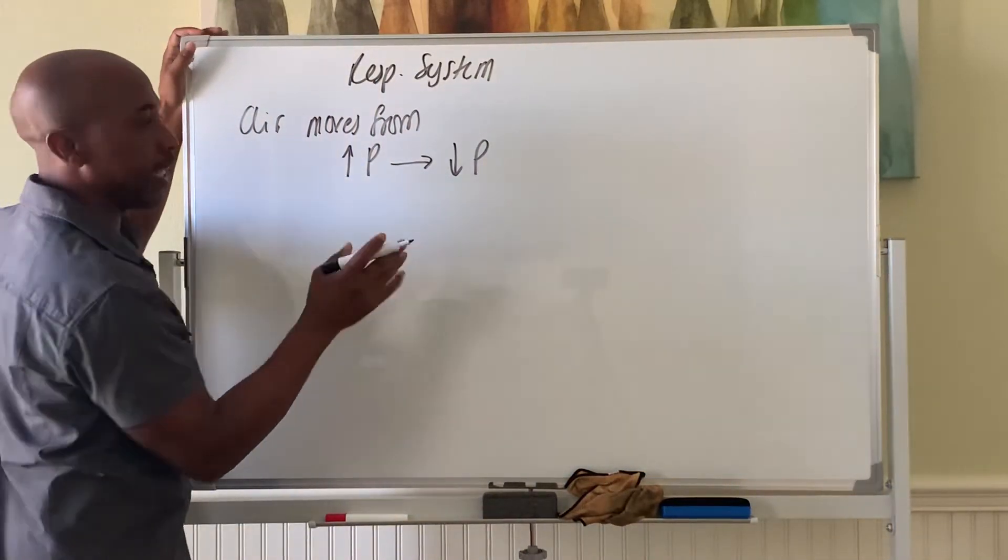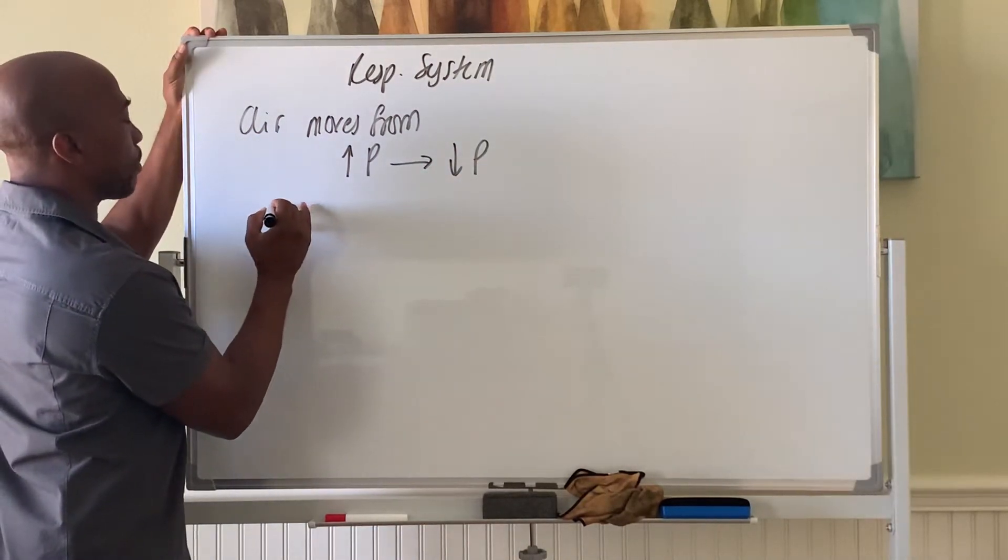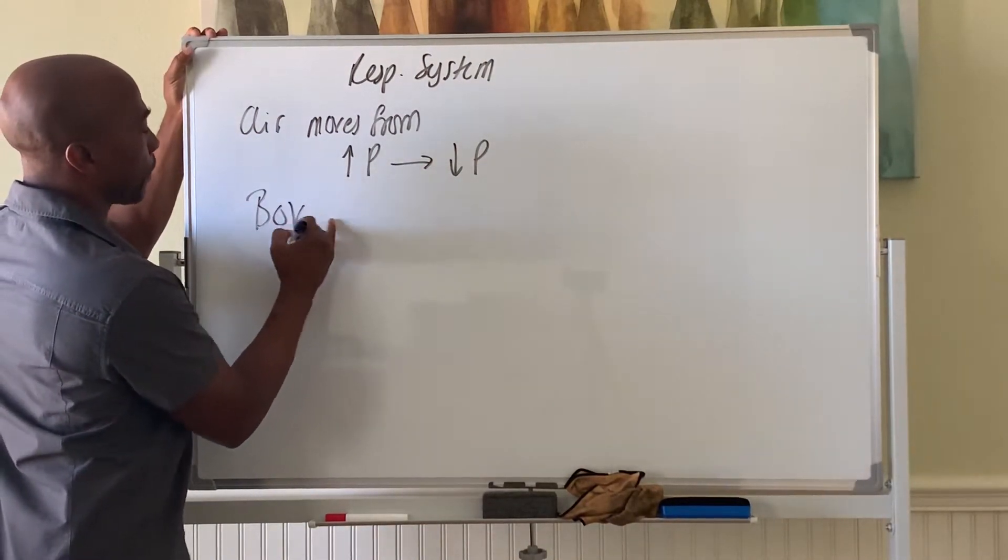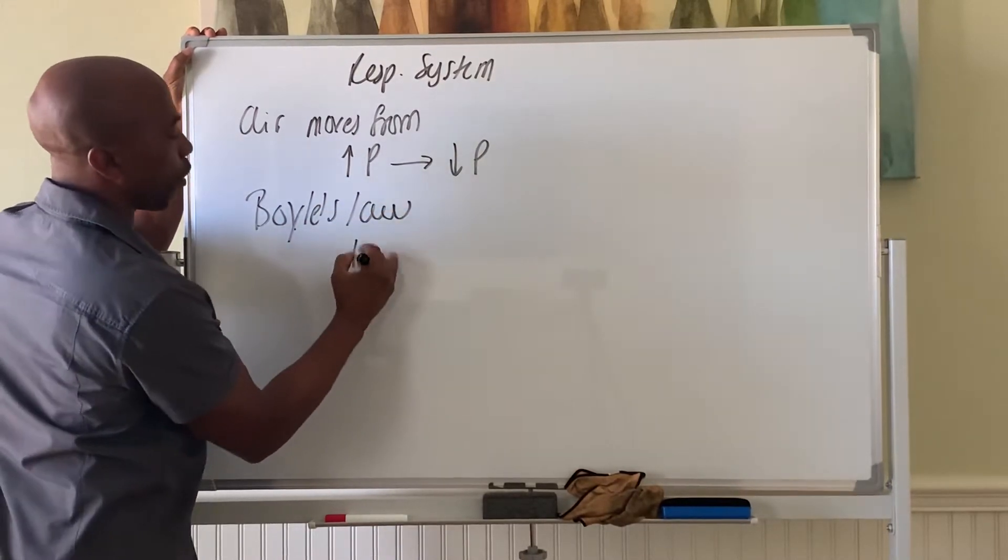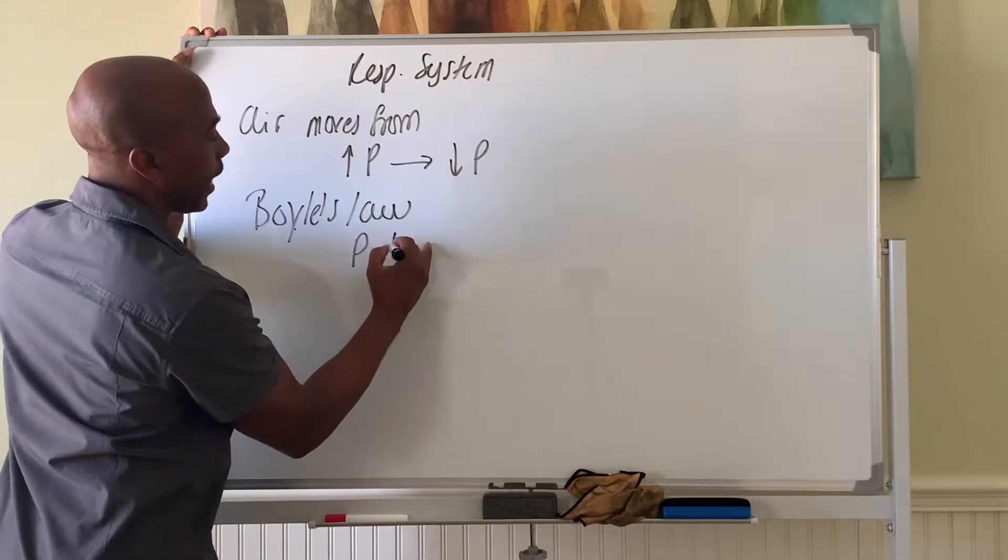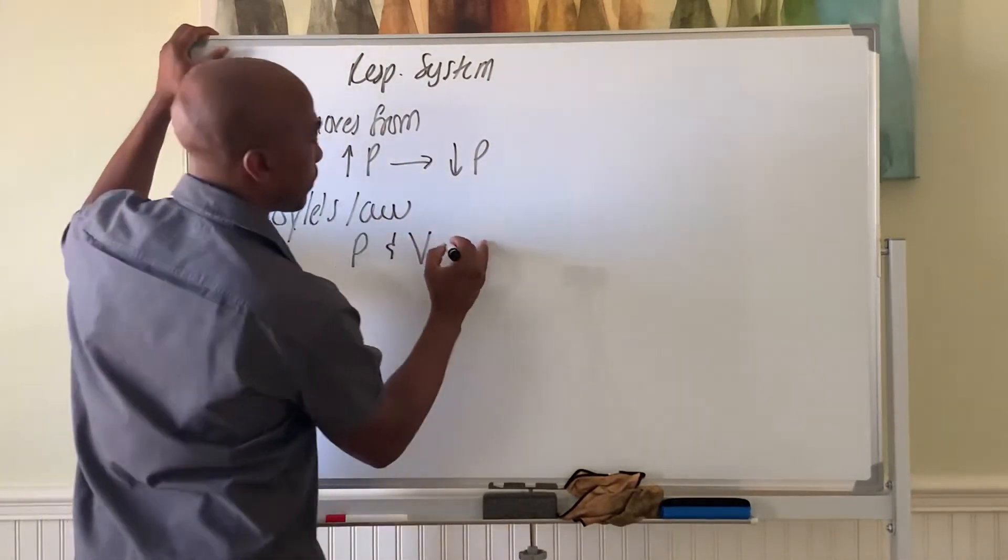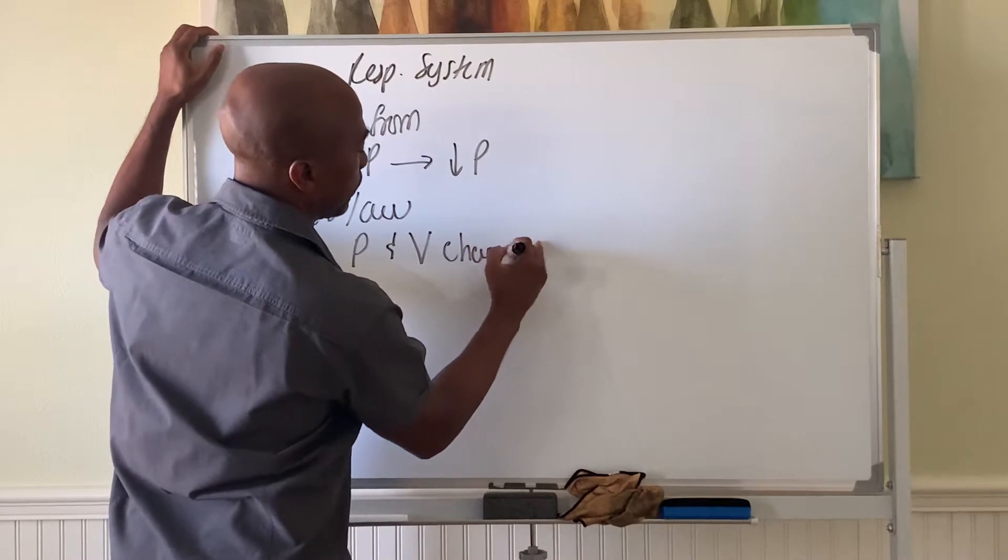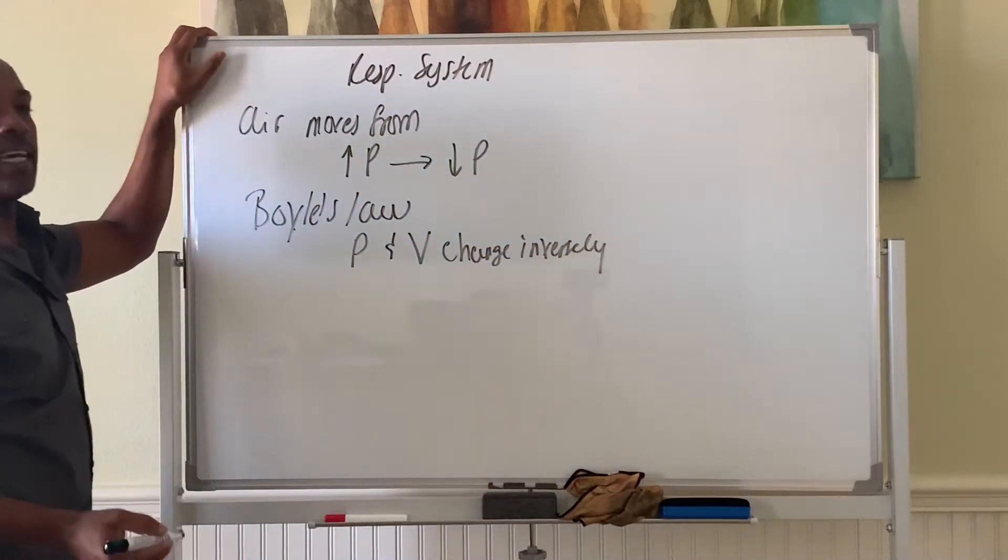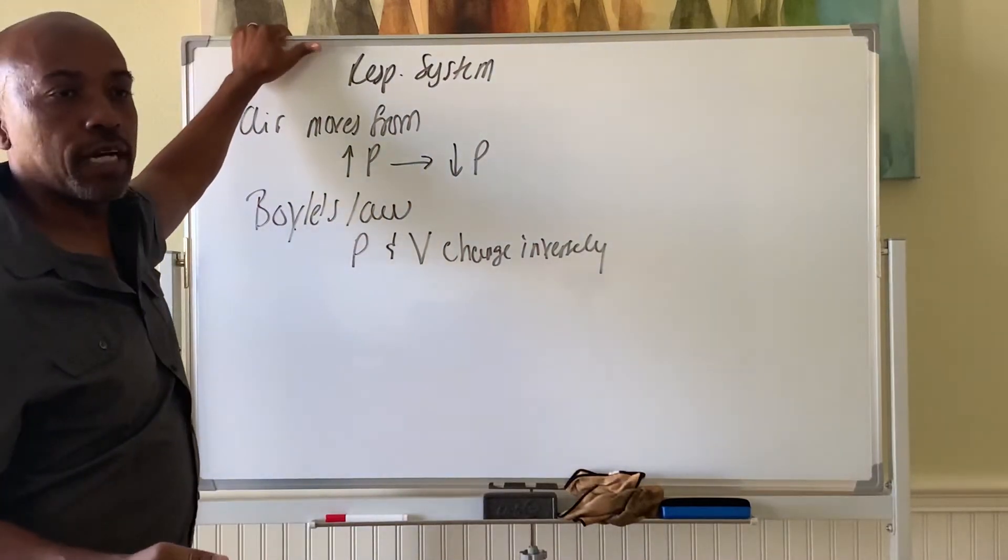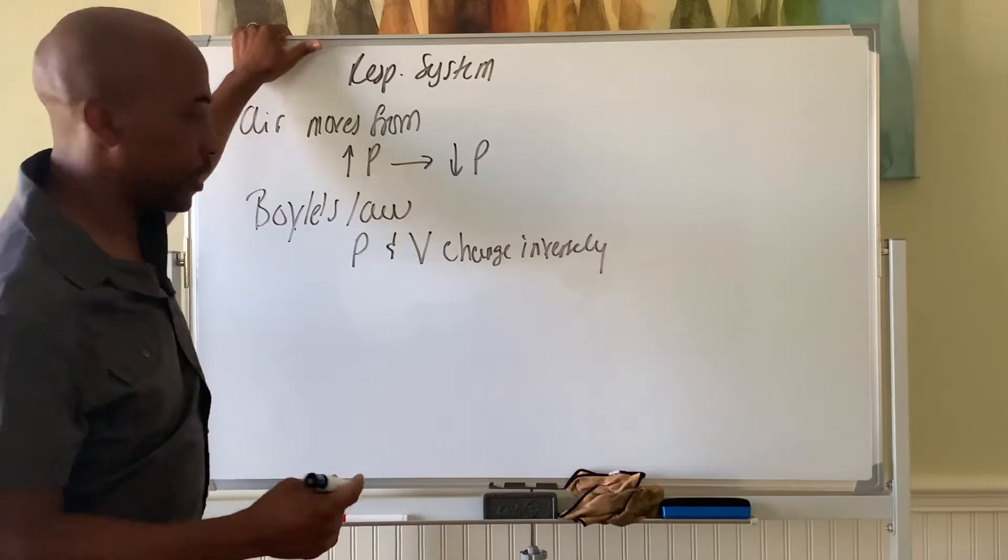Pressure and volume are linked in what's called Boyle's Law, which states that pressure and volume change inversely. So basically if volume goes up, pressure goes down. If volume goes down, pressure goes up.